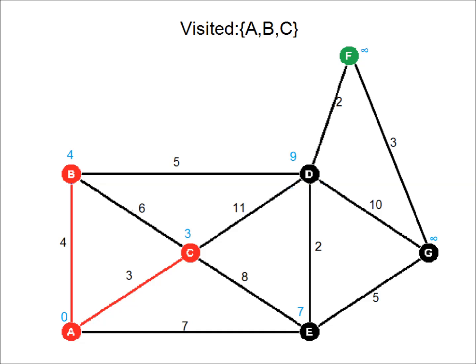Next we visit E, because it has a weight of seven, which is lower than D's weight of nine. From here, only G's calculated distance is lower than its currently calculated distance, so we update G's tentative distance with the value twelve.